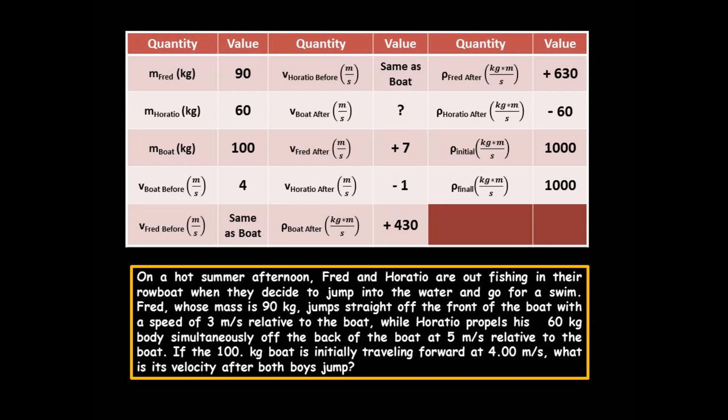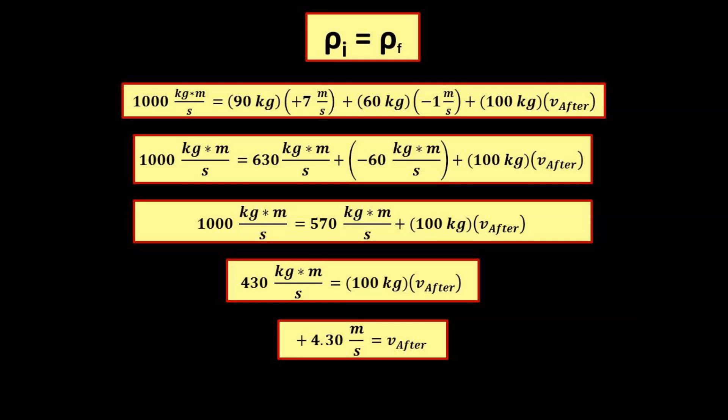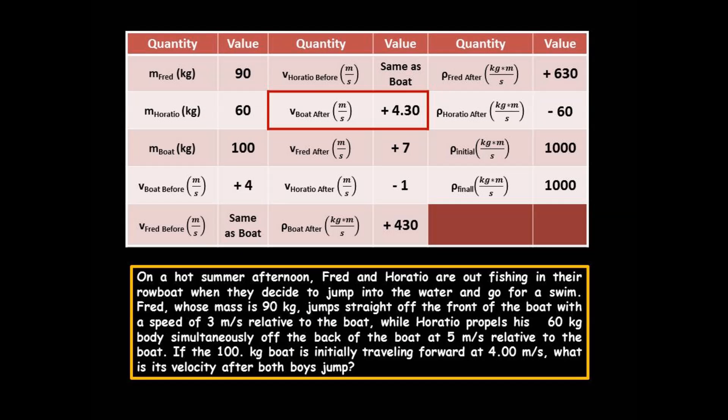Adding Fred's and Horatio's momenta: 630 plus (−60) equals +570 kg·m/s. Subtracting that from both sides leaves 430 kg·m/s for the boat's momentum after the boys jump. Setting the boat's momentum equal to its mass times its final velocity — 430 = 100 × v — and dividing both sides by 100, the boat's final velocity is +4.30 meters per second.